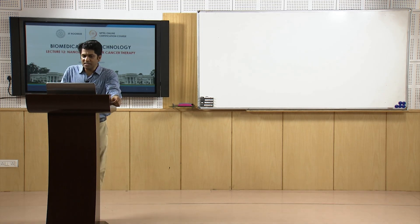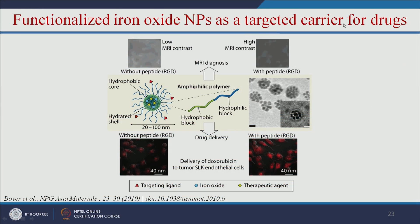We can also use functionalized iron oxide nanoparticles as targeted carriers for drugs. The RGD peptide — arginine, glycine, and aspartate — can be attached to the nanoparticle. This three-amino-acid peptide enhances cell attachment. Without the RGD peptide, cell attachment is less, but with the RGD peptide, cell attachment is more and gives a stronger signal.